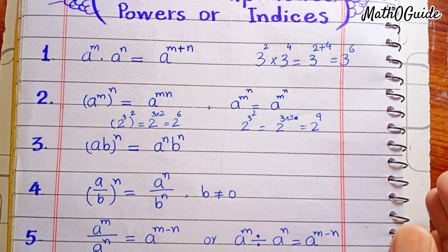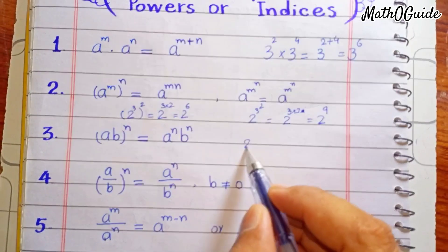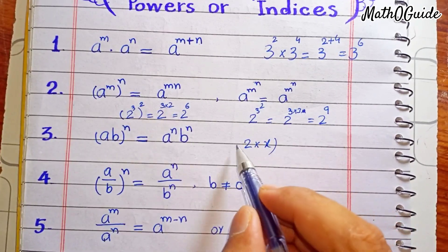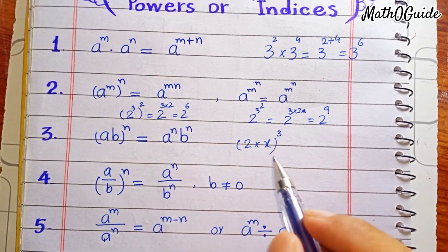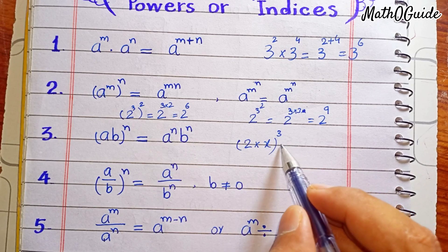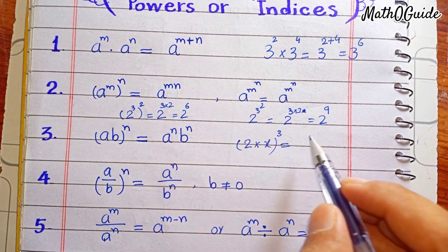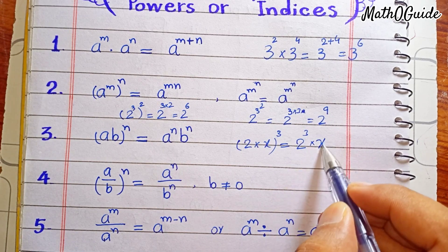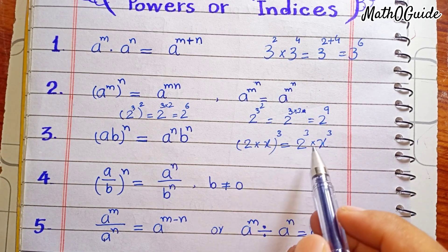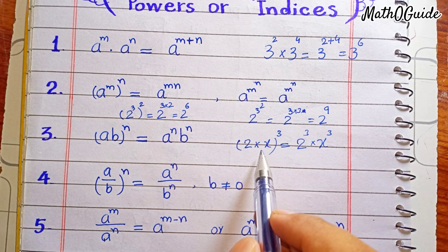The third rule is when two bases are being multiplied and they share one whole power. For example, 2 multiplied by x, all raised to power 3 — here 3 is the power for the whole expression. We can separate it: a raised to power n times b raised to power n. So 2 has power 3 and x has power 3. We can separate or combine these forms.